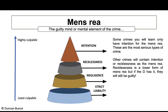Here is a pyramid of culpability — as it travels upwards to the peak, that is the highest culpability or seriousness in terms of mens rea. The mens rea is the mental element of the crime, the guilty mind, that needs to be proven by the prosecution for all crimes except strict liability or absolute liability. At the top sits intention, so the most serious crimes are intent-only, known as specific intent offences.